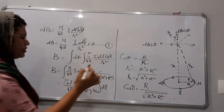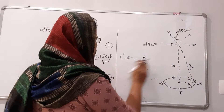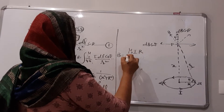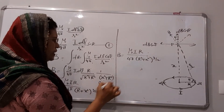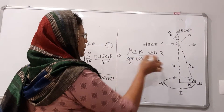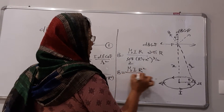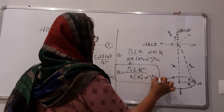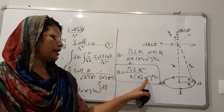Evaluating ∫DL over the complete loop: since R is the radius, the complete circumference = 2πR. Substituting, B = μ₀IR / (4π · (R²+x²)^(3/2)) · 2πR. The 2π and 4π simplify, and R · R gives R². Therefore, the final equation is B = μ₀IR² / (2(R²+x²)^(3/2)). This is the equation for magnetic field intensity at any point P, at distance x from the centre of a current-carrying loop of radius R carrying current I.